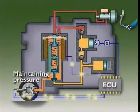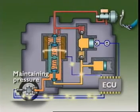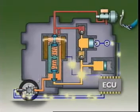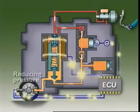If the sensors signal the wheel is still decelerating too rapidly, the ECU sends a larger current to the hydraulic unit. The armature moves even further and opens the valve.